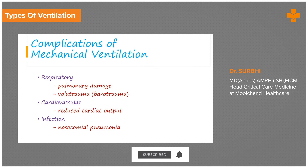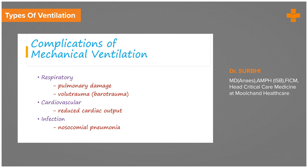We must also look at the complications of mechanical ventilation. Respiratory complications include pulmonary damage and volutrauma — if too much volume is given, there will be volutrauma; if the lungs are stiff and you push in too much volume, you might have barotrauma. Cardiovascular complications include reduced venous return due to positive pressure ventilation, which can reduce cardiac output and blood pressure. Additionally, due to endotracheal or tracheostomy tubes and ventilator circuits, patients can develop nosocomial pneumonia.